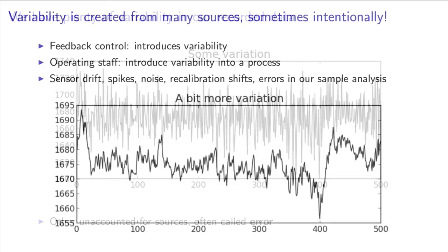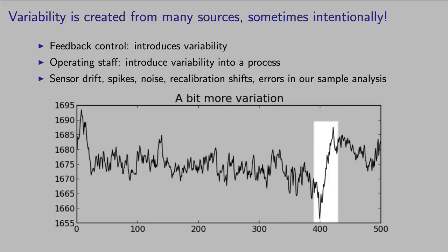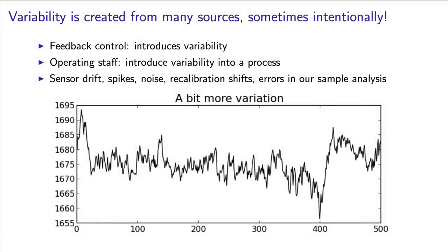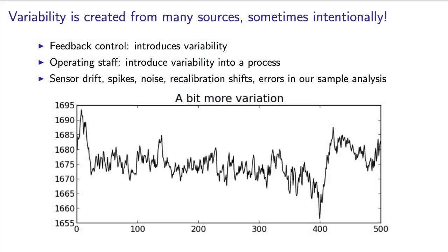Something you're more likely to see in practice is this, where there are drifts and changes. For example, at sample 400, a feedback controller notices the drift away from the target of 1680 and starts to move the process back again by sample 425. There is also a slow downward trend all the way from sample 100 to 400. There is natural drift and movement in the process — it happens in all systems. Equipment goes out of alignment, catalysts become less efficient, dirt and fouling set in, roads and buildings crack and break, and so on. The only difference is the length of the timescales involved.